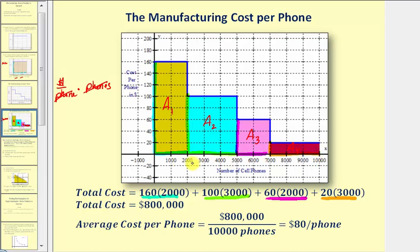Now once we have the total cost, we might also want to find the average cost per phone. To find the average cost per phone, we take the total cost of 800,000 dollars and divide by the total number of phones, which is 10,000, which comes out to 80 dollars per phone. Notice how for the first 2,000 phones the cost was 160 dollars per phone, but after producing 10,000 phones, the average cost drops to 80 dollars per phone.